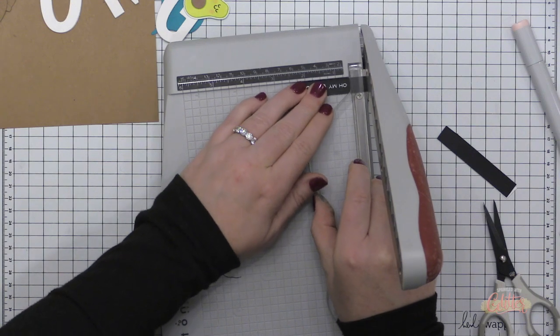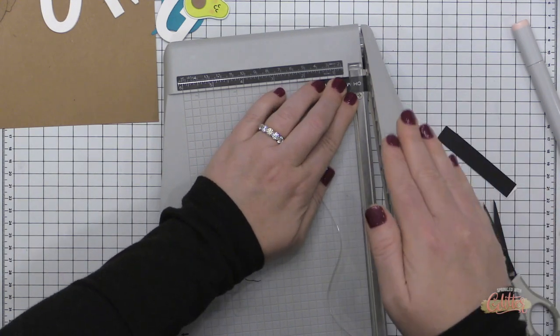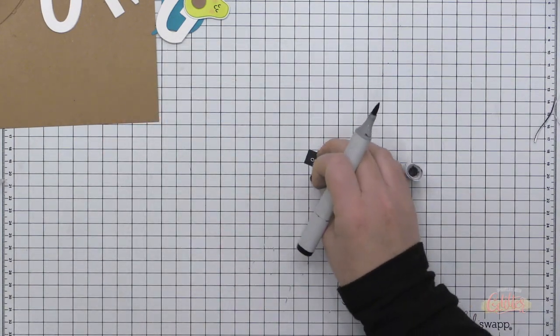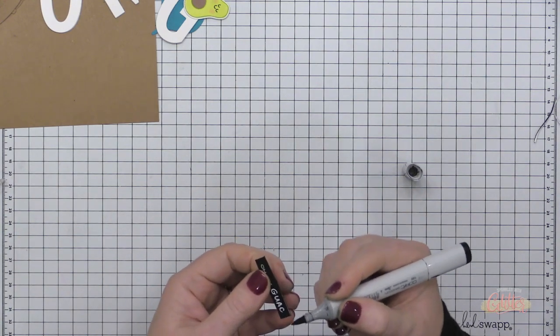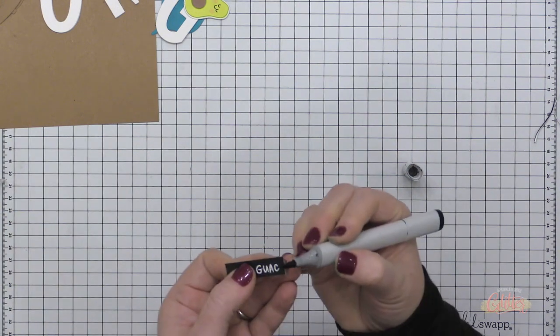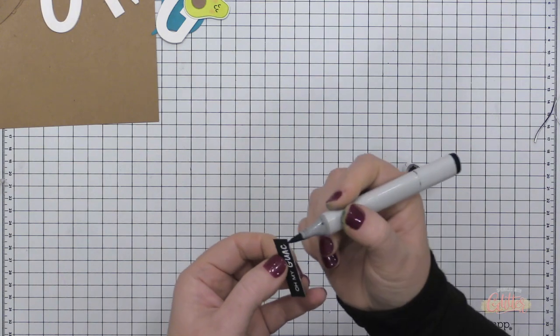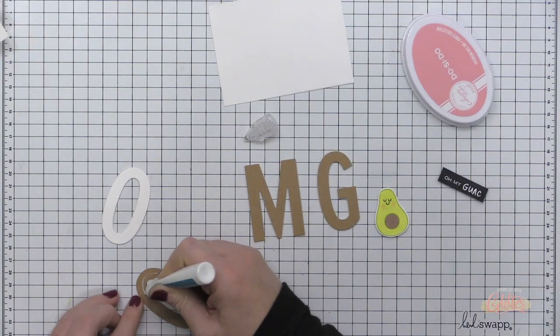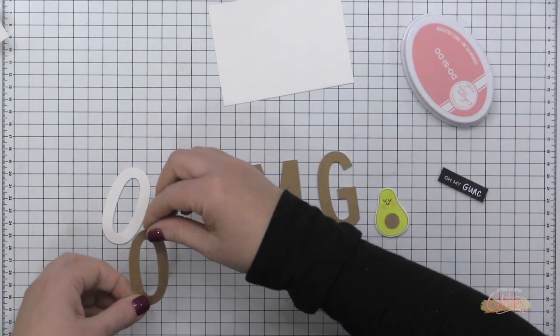Now I'm taking this over to my guillotine trimmer and I'm trimming this off so that I have a nice little compact sentiment strip here. And in order to hide the white edge of the printer paper, I'm just taking my black Copic marker and tracing along the edges of this sentiment strip just to kind of make it look really nice and clean and make it look like it's just a black piece of cardstock instead of printer paper stacked on top of black cardstock.